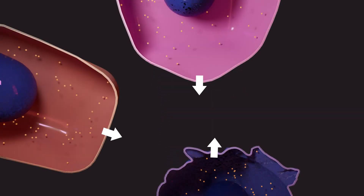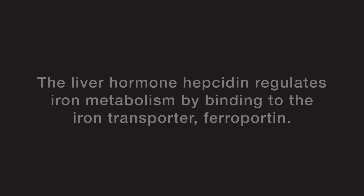The loss of ferroportin from the basolateral membrane of enterocytes prevents intestinal iron absorption. Its loss from plasma membranes of macrophages and hepatocytes prevents iron from being transported into the circulation from these cells.